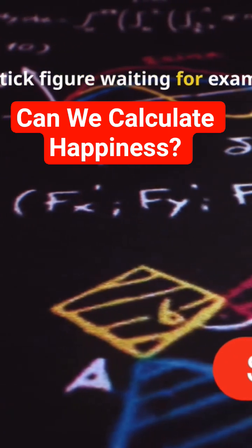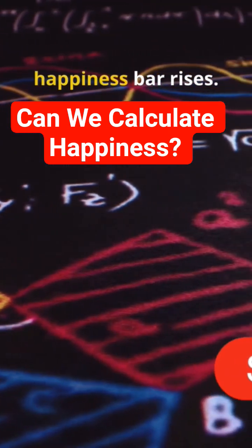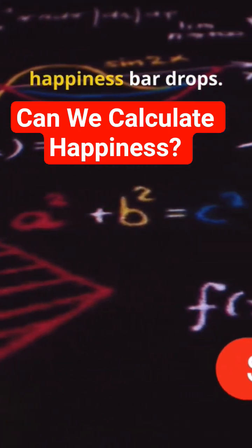Show a stick figure waiting for exam results. If they expect 50 marks but get 70, happiness bar rises. If they expect 90 but get 70, happiness bar drops.